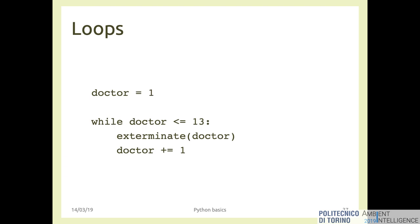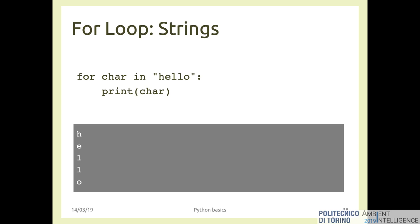We also briefly saw that there is another type of loop in addition to the for loop: the while loop. It is structured very similarly to other statements in Python — there is the keyword while, the condition, a colon, a new line, indentation, and the body of the loop. The for loop is structured in a really similar way: the for keyword, the variable you want to fill, the collection to loop over, the colon, new line, indentation, and so on.